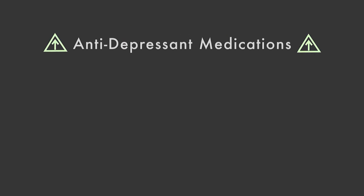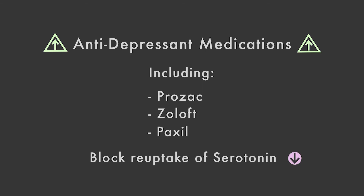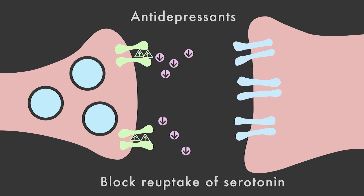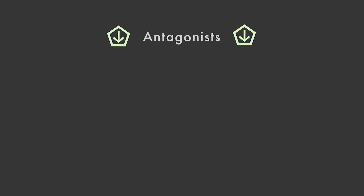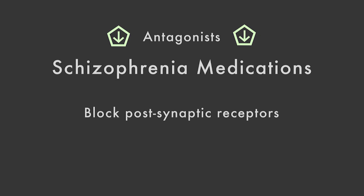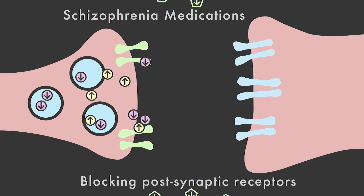Many antidepressant medications, including Prozac, Zoloft, and Paxil, work in roughly the same way, but specifically block the reuptake of serotonin. Other drugs are antagonists. Some of the medications used for schizophrenia, for example, block postsynaptic receptors and seem effective in helping patients control psychotic thinking and restore normal functioning in their lives.